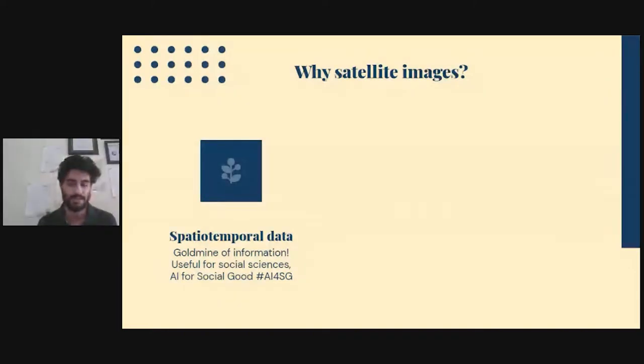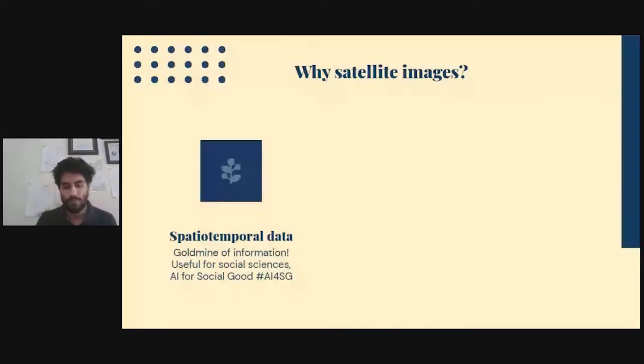These are an absolute goldmine of information. And if you're a researcher, these things are very useful for social sciences, because not only can you see how things have been changing spatially, but you can track how these things have been changing in a temporal scale. Recently, there has been a flurry of papers in AI for social good, which have been using a lot of satellite images and consequently making models out of it.